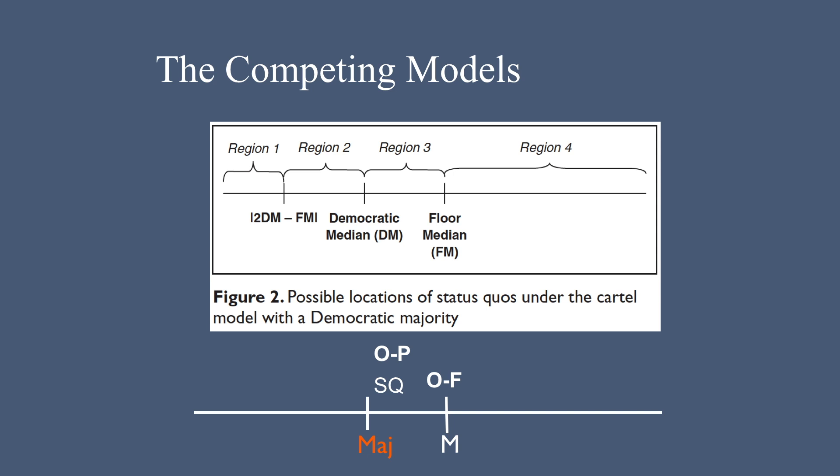Finally, both models predict that anything in Region 4 ends up at M because no one has incentives to block it.